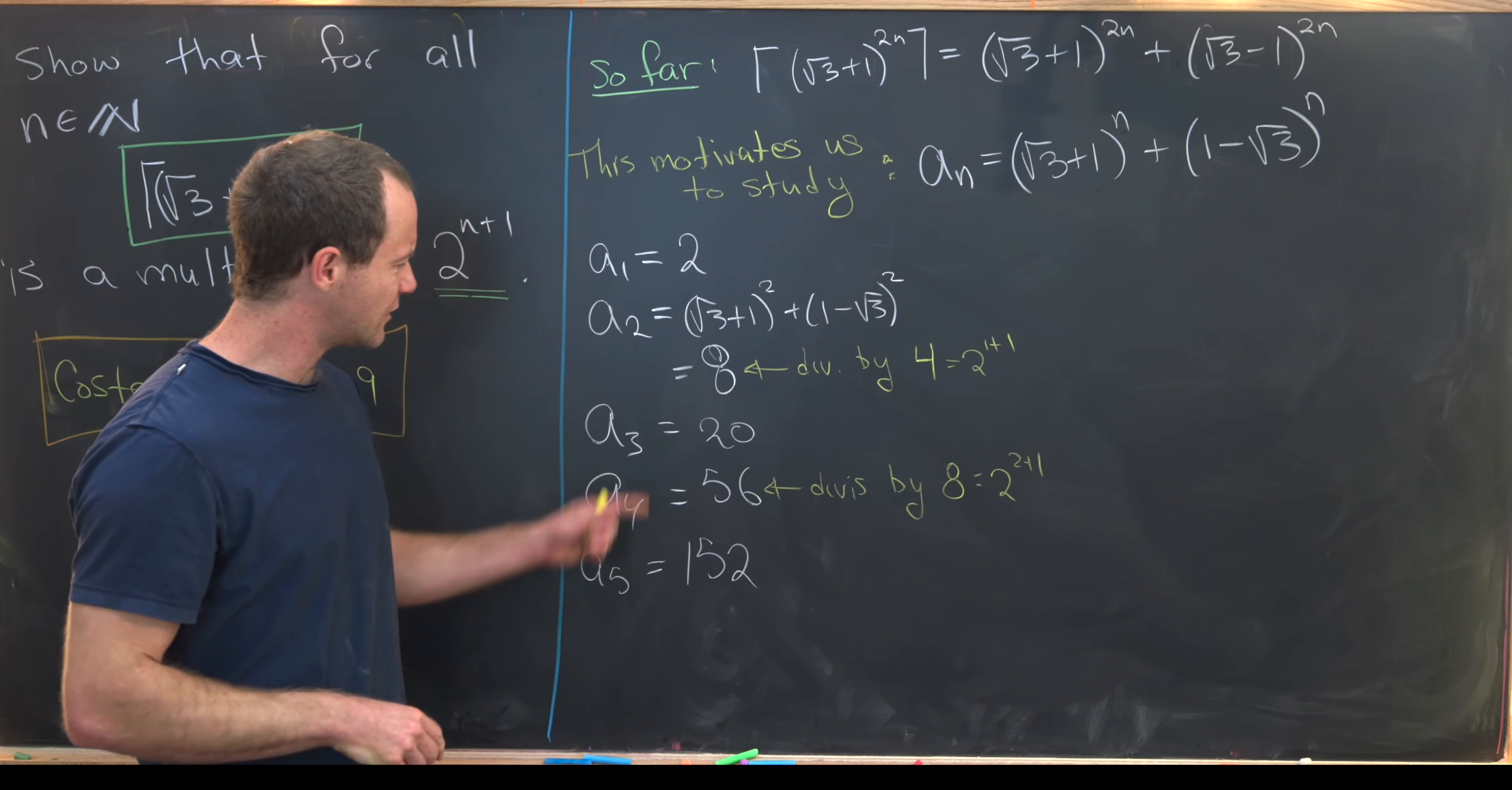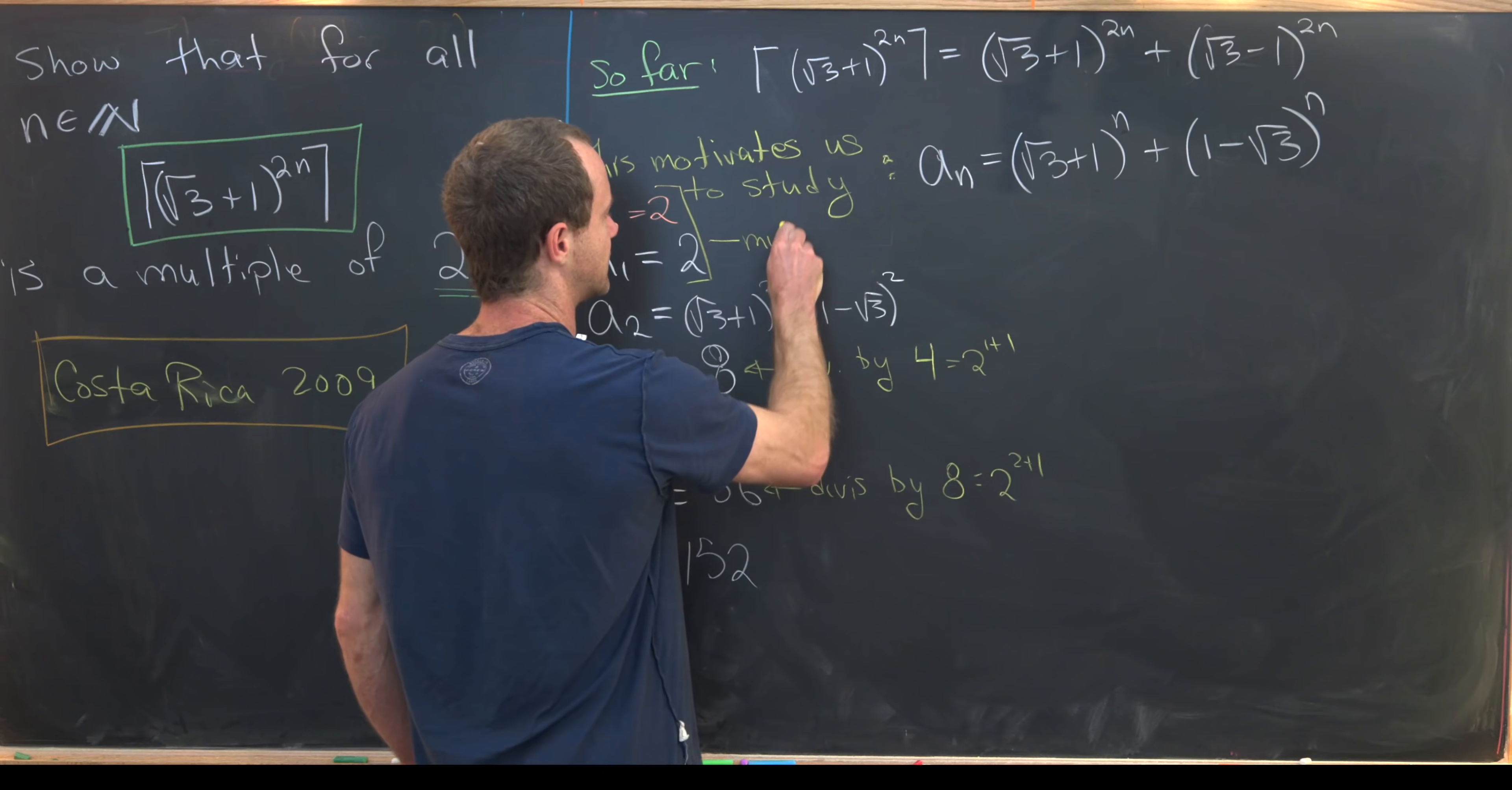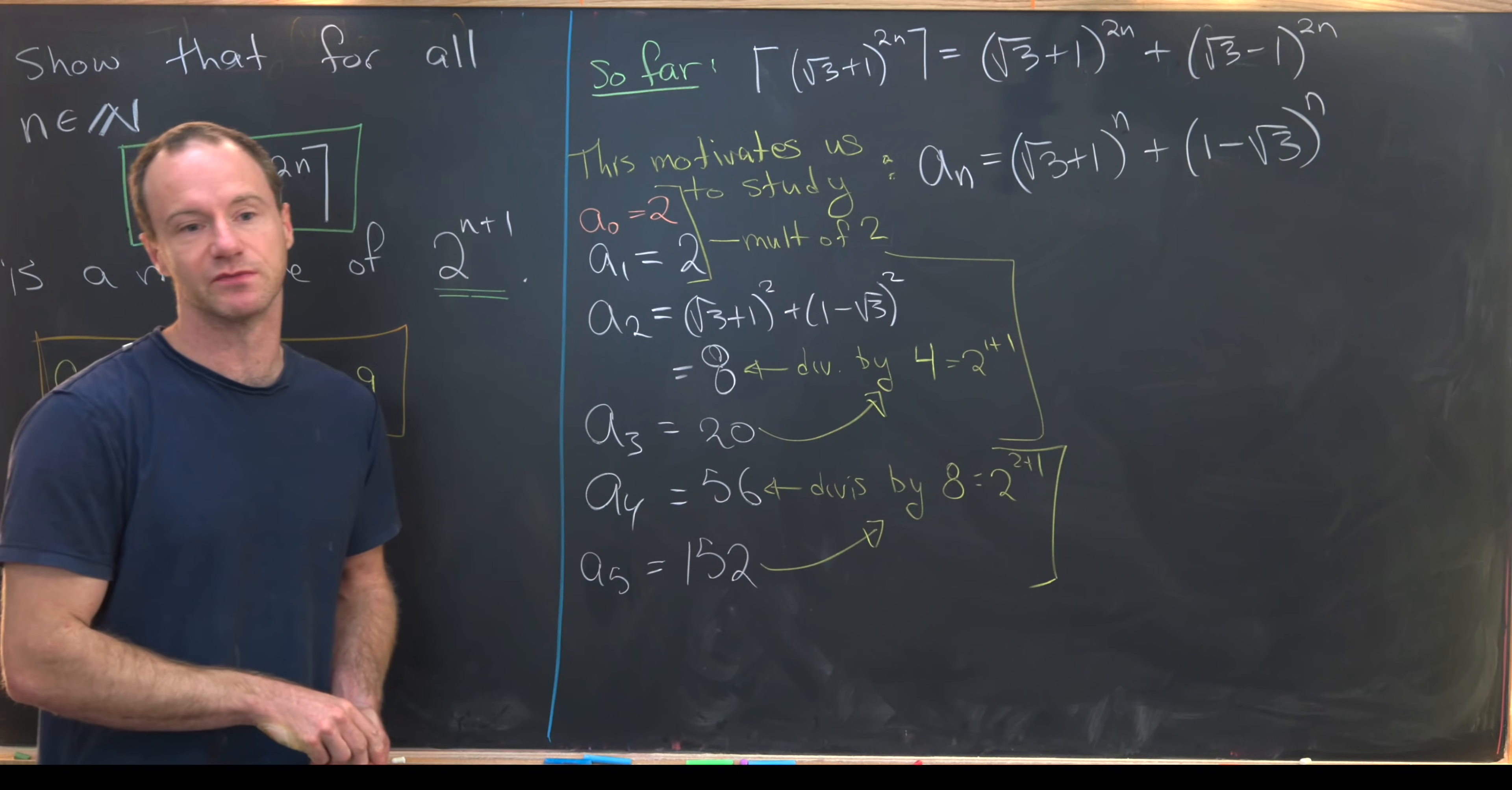Now we just need to notice what's happening with these odd terms. Well, maybe it would be useful to extend this back to a0. Notice that a0 is also 2. And then we see that a0 and a1 are both multiples of 2. And now we've got a pattern happening. So notice that a2 and a3 are both multiples of 4 or they're divisible by 4. And then a4 and a5 are both multiples of 8 or they are divisible by 8.